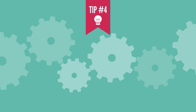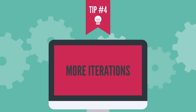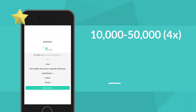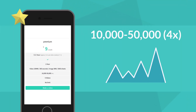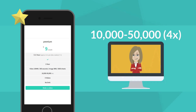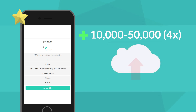Tip number four: more iterations. Premium users have access to increasing the number of learning iterations, which has a drastic impact on results. More learning iterations will consume more cloud credits.